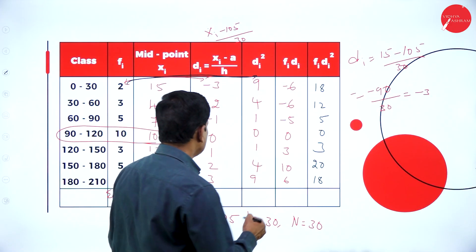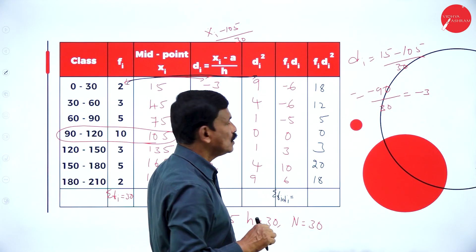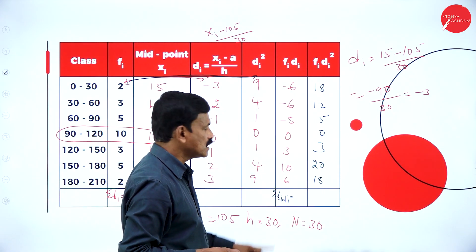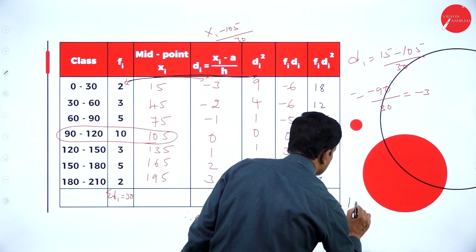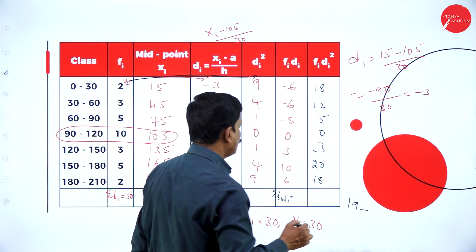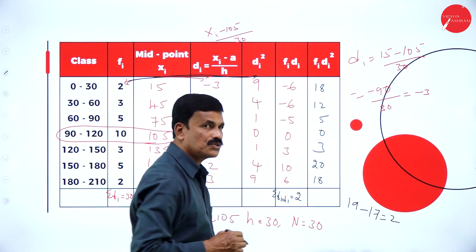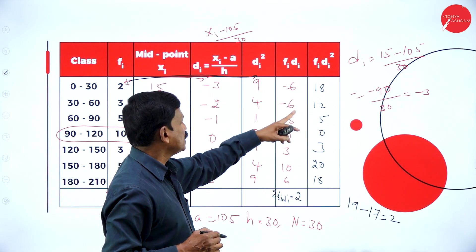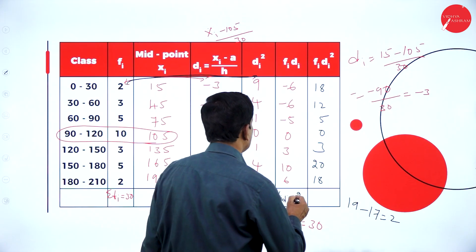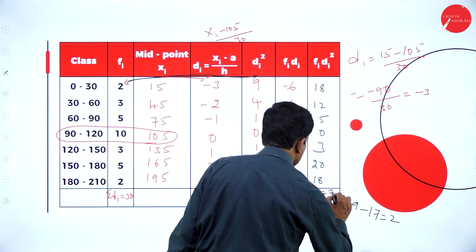Now add sigma fi di. If you add: 3 plus 10 plus 6 is 19, minus 6 minus 6 minus 5 is 17. So 19 minus 17 equals 2. Sigma fi di is 2. Now if you add fi di squared: 18 plus 12 plus 5 plus 0 plus 3 plus 20 plus 18 equals 76. Sigma fi di squared is equal to 76.